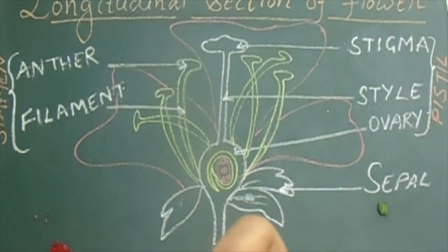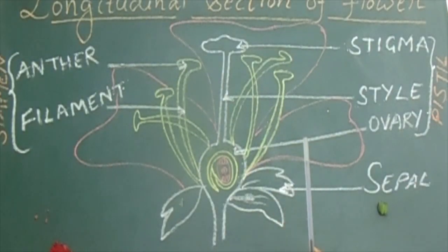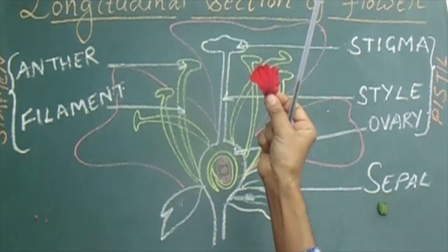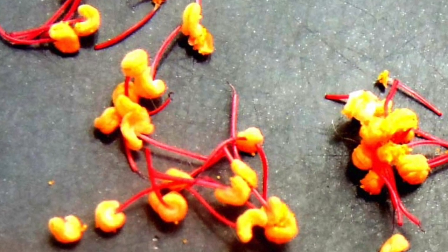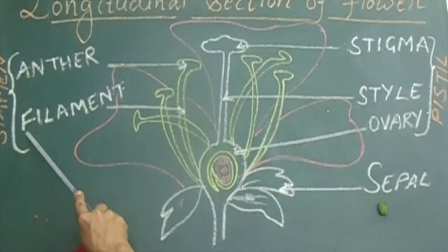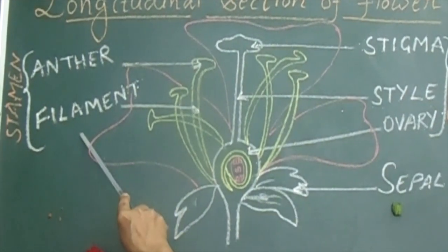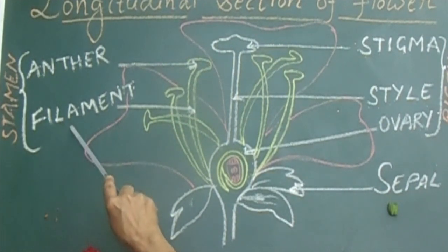Second, we have the colored part — we call it as petals. All these colored parts are called petals. Their function is they are brightly colored so that these petals will attract the insects, and that will help in the process of pollination. Next, we have stamen, which as we know is the male reproductive part of a flower. Each stamen consists of anther and filament. It helps in the process of fertilization.